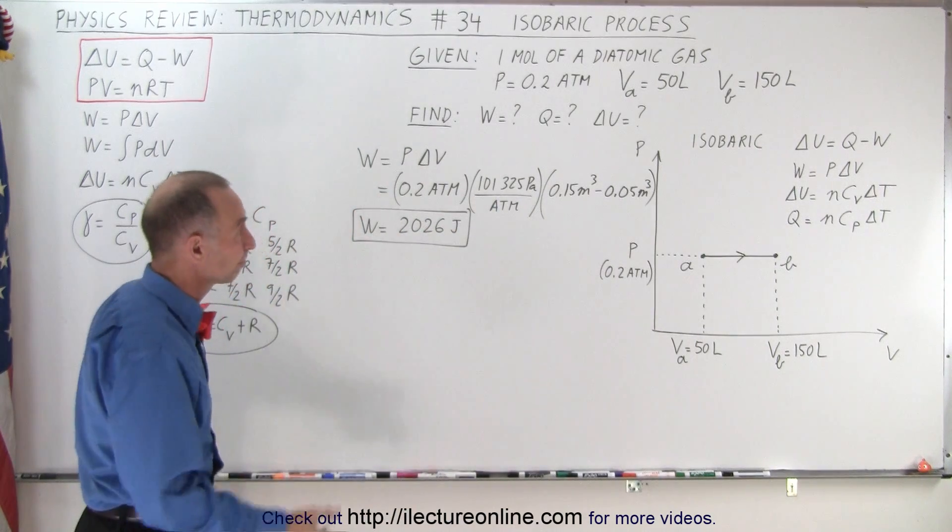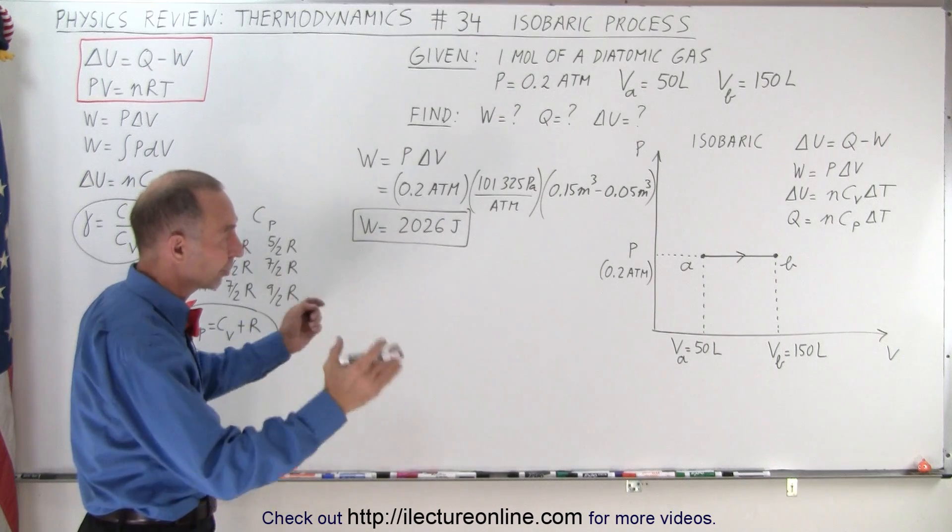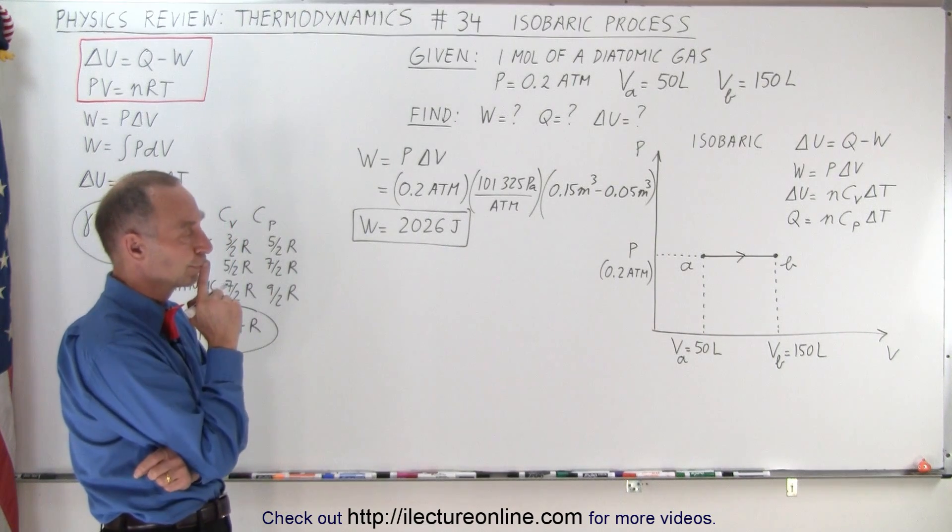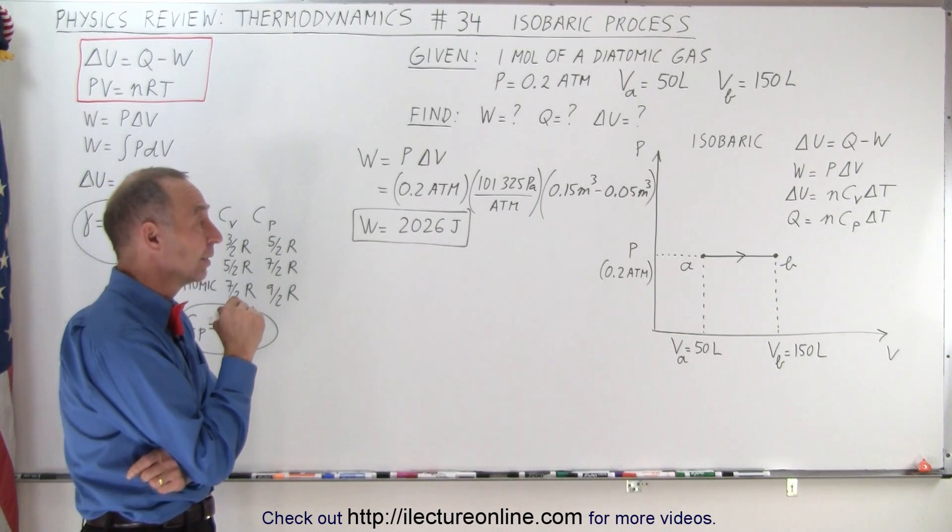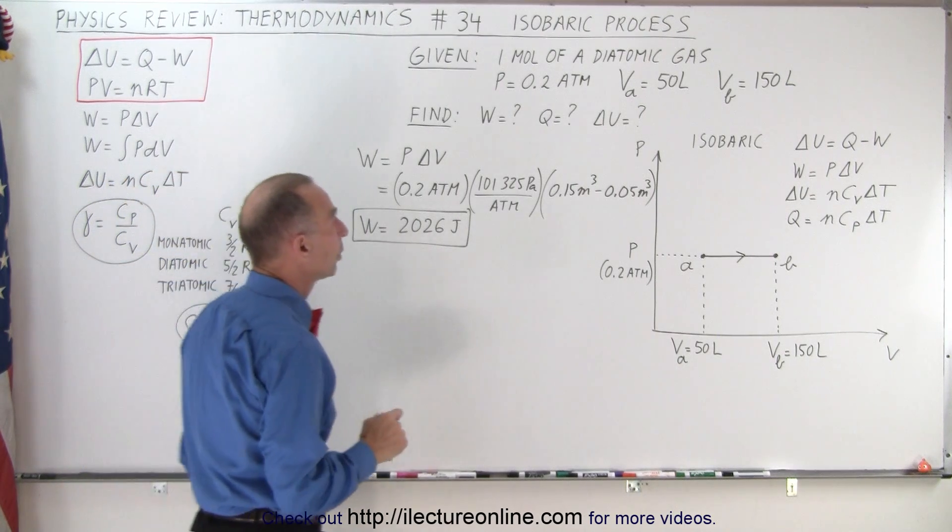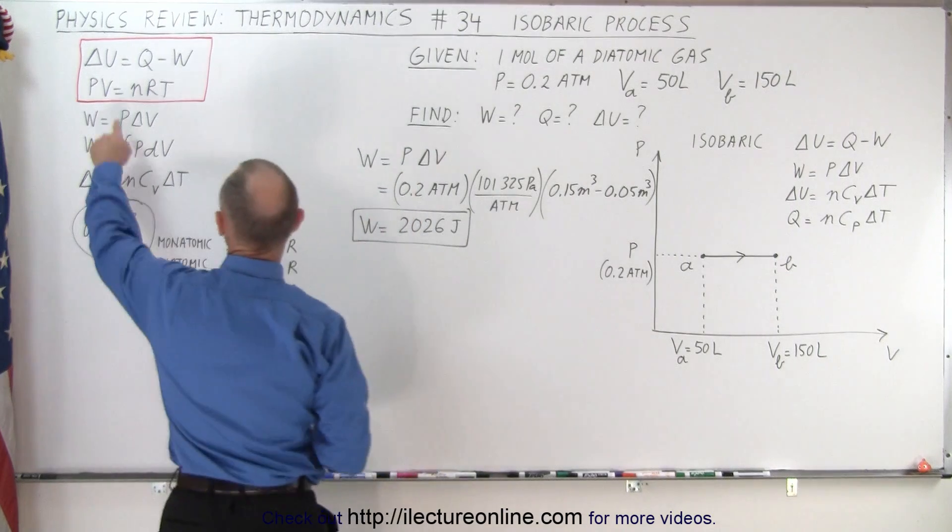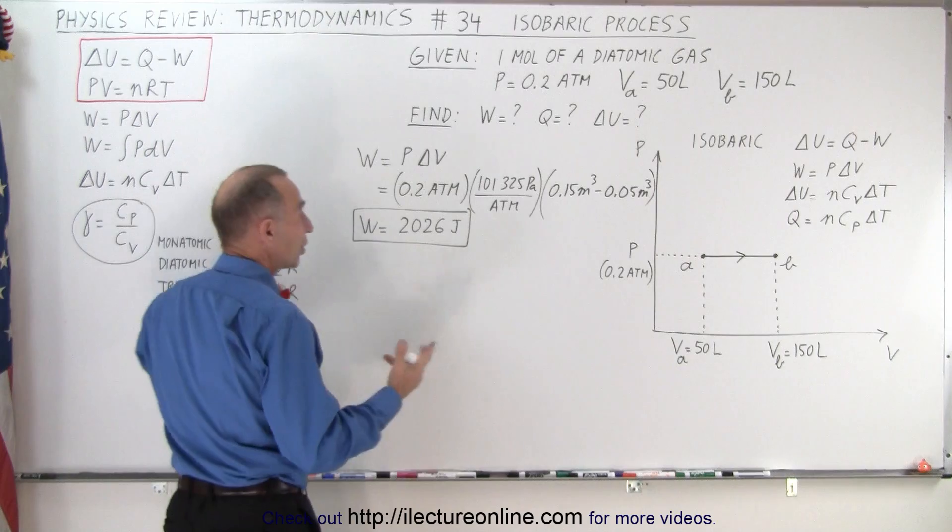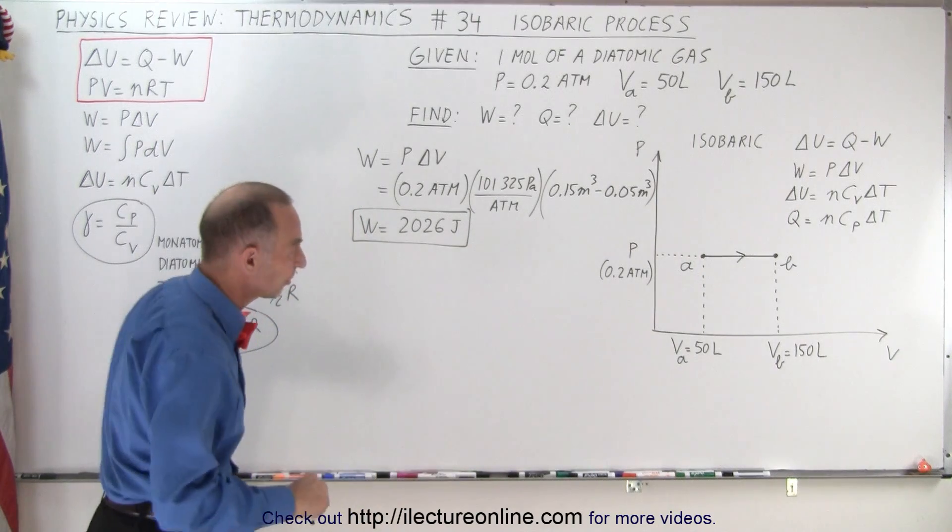In an isobaric process, pressure remains constant, you know the change in volume, there's a work done. However, how do we come up with the change in the temperature? So for that we need to go to our ideal gas equation, PV equals nRT. Notice they have a red box around it. These are the two key equations for any of these processes.